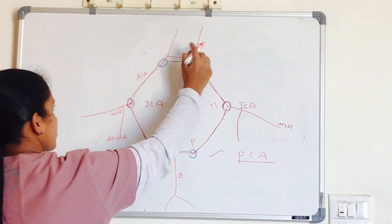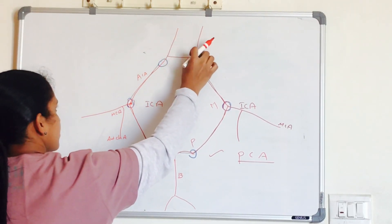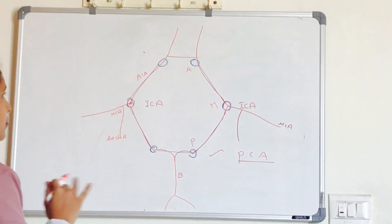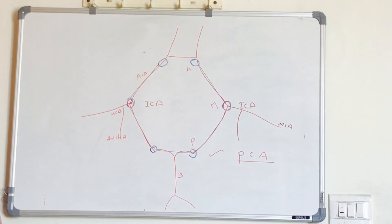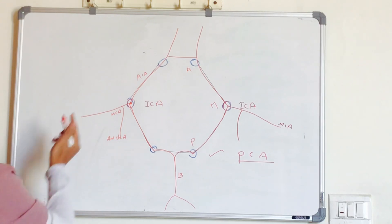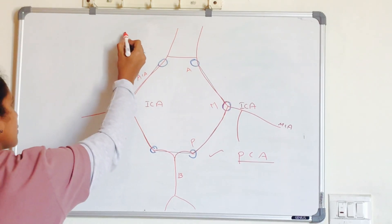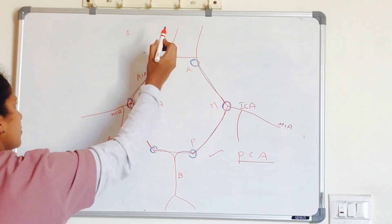The artery connecting the two anterior cerebral arteries is the anterior communicating artery. So this is your Circle of Willis.